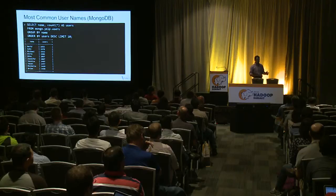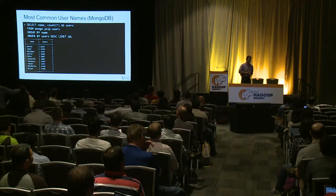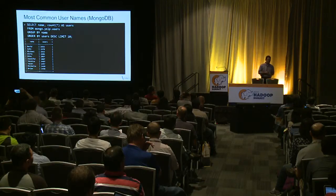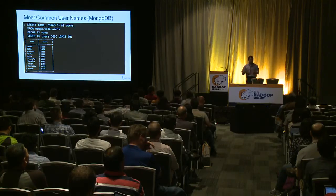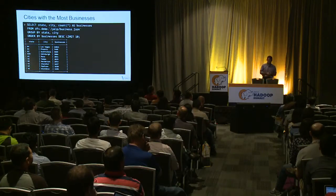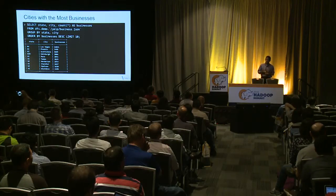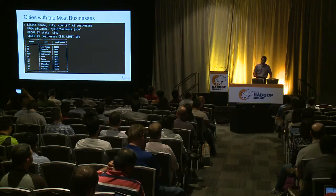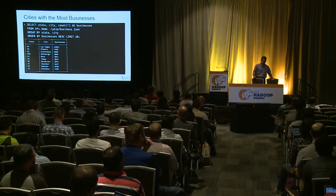What are the most common user names? We query the MongoDB users collection — select name and count star as users, group by name, order by most common. As expected, David, John, Michael, and Chris are the most popular names. What are the cities with the most businesses? This dataset covers the Arizona and Nevada area. Querying business.json, Las Vegas has the most businesses, followed by Phoenix, then Scottsdale.